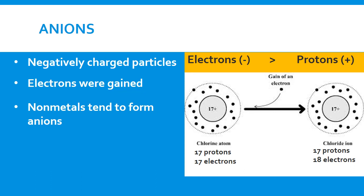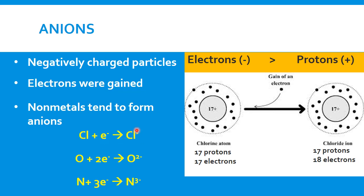We have more electrons than protons, which results in a negative charge. In the case of chlorine, it gains one electron, ending up with one more electron than protons — overall negative charge. Oxygen gains two electrons, ending up with an overall −2 charge. Nitrogen gains three electrons, giving it three more electrons than protons — an overall −3 charge.